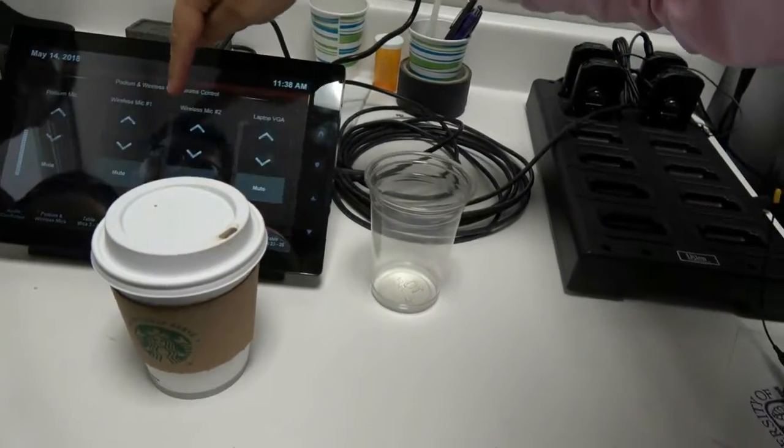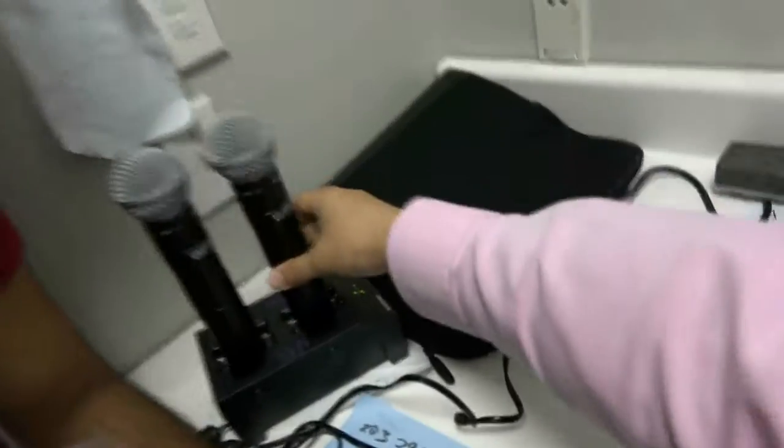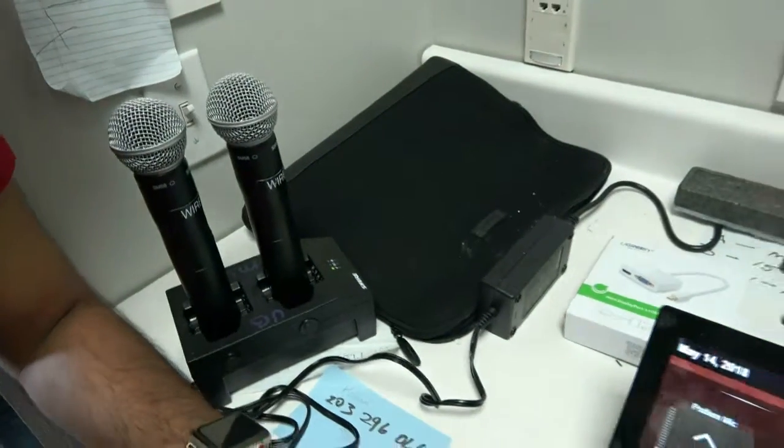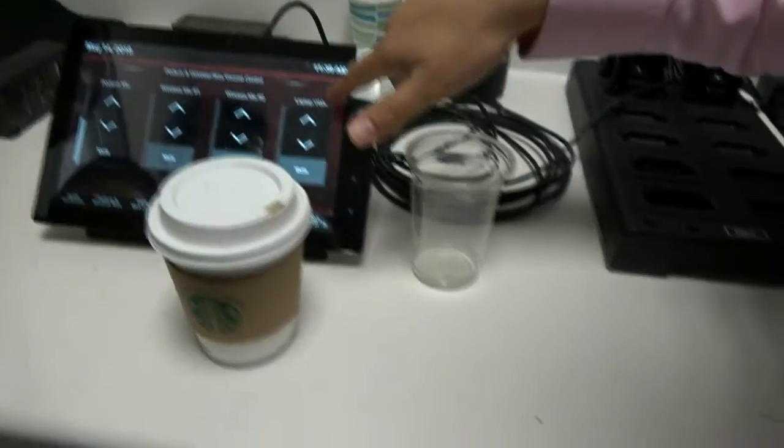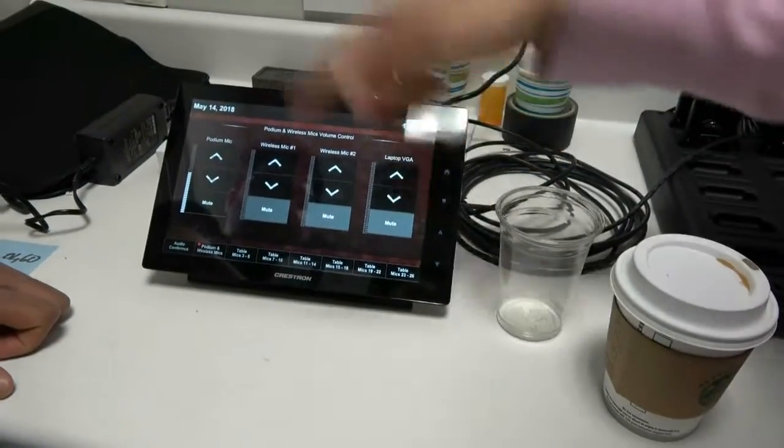You have wireless microphone one, wireless microphone two. Here is wireless microphone one, wireless microphone two. Sometimes we put them on the tripod and put them outside. Then you have the laptop auxiliary cable, which is on the podium.